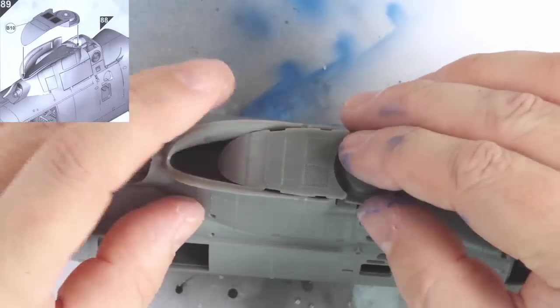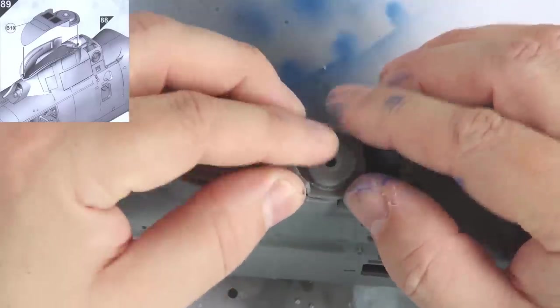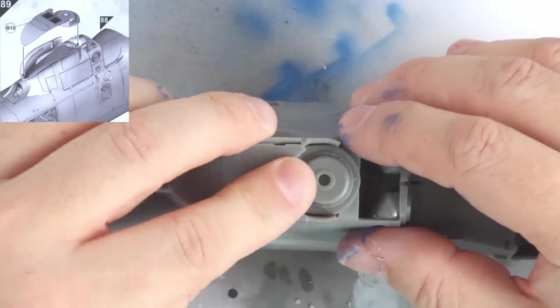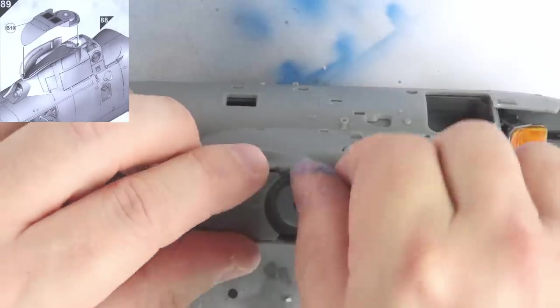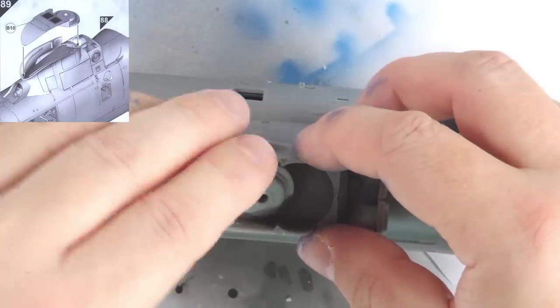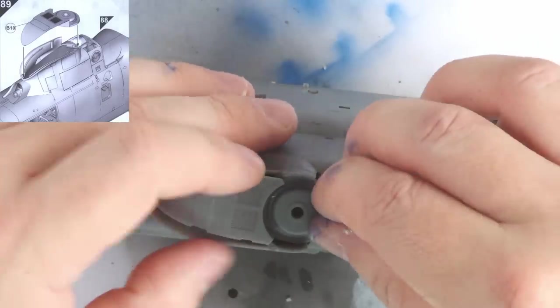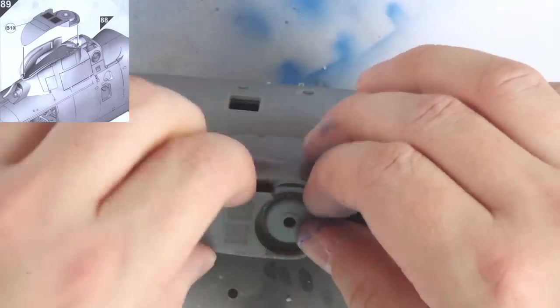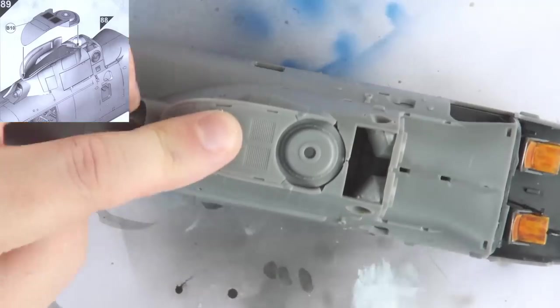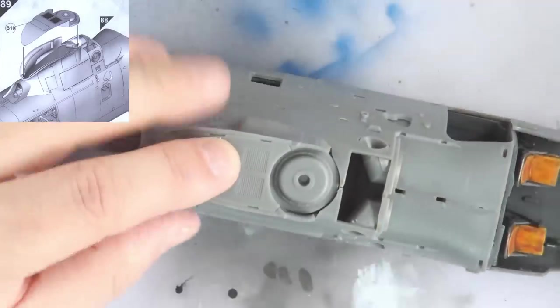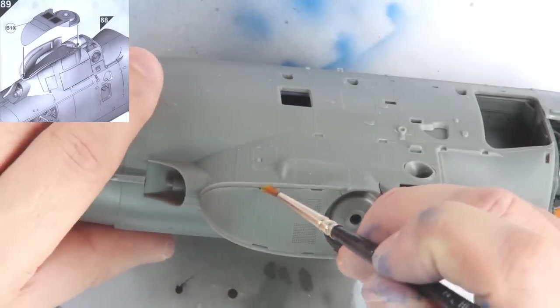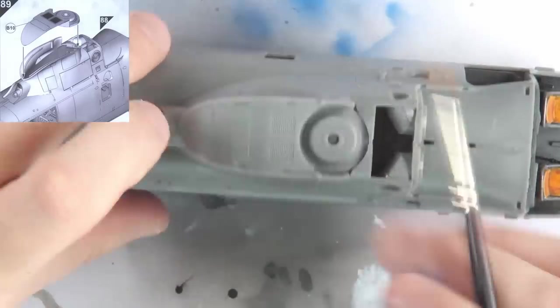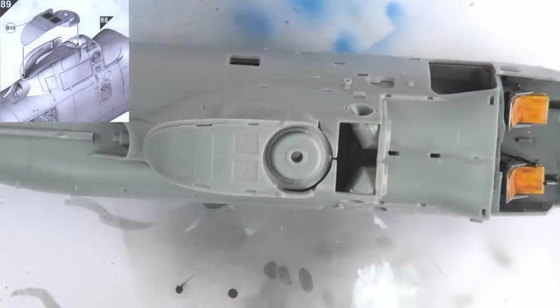Step 89 should really come immediately after step 83, because this is not an easy part to fit if your fuselage halves are already dry, as you can see from me struggling here. Ideally, you need the flexibility of the newly joined halves to insert this piece, as it's not a simple drop-in. Once you get it however, it slots in place perfectly. Just be aware and don't leave this step until after everything is dry, or you'll have a harder time of things.